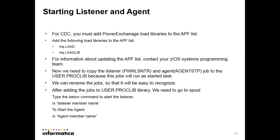Now we need to copy the Listener — PWNLSNTR — and Agent — AGENTSTP — jobs present in the RunLib library to the user.proclib library. These jobs will run for a long time, so they cannot be run as batch jobs; they will be run as started tasks. Copy these two jobs to user.proclib. You can rename them so they are easy to identify in the spool. After copying and renaming, start the Listener and Agent using the command: /S followed by the Listener member name, or /S followed by the Agent member name.